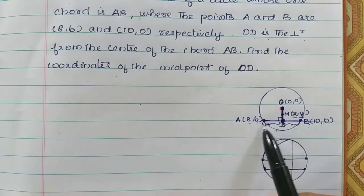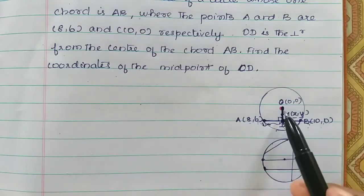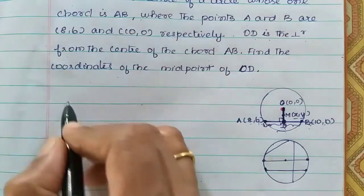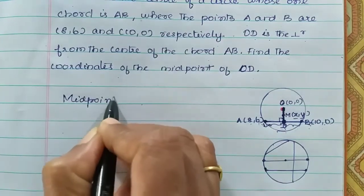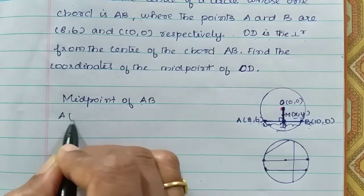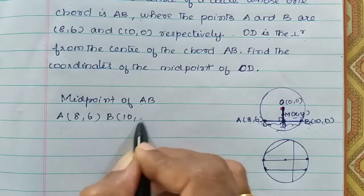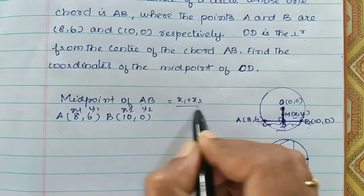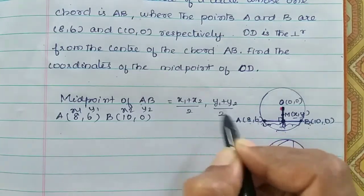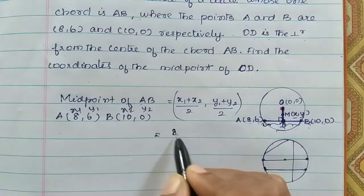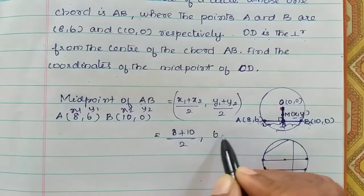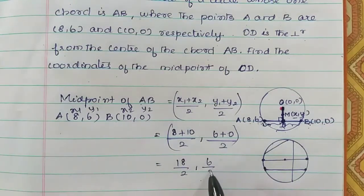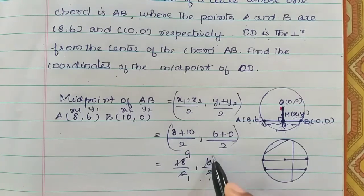AB has midpoint D. That means we apply the midpoint formula to find D. First, midpoint of AB: A is (8,6) and B is (10,0), so x1=8, y1=6, x2=10, y2=0. Midpoint formula is ((x1+x2)/2, (y1+y2)/2). Substituting: (8+10)/2 = 18/2 = 9, and (6+0)/2 = 6/2 = 3. So D = (9, 3).